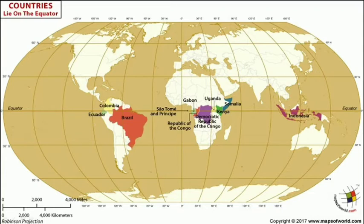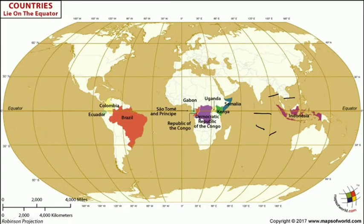First we have to know what the equator is. The equator is an imaginary line that divides the entire globe into two parts. The northern part is called the northern hemisphere and the southern part is called the southern hemisphere.